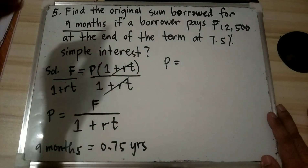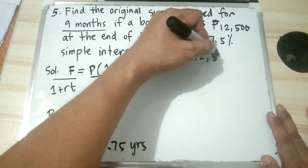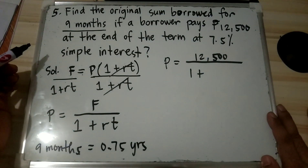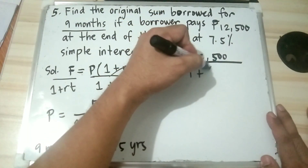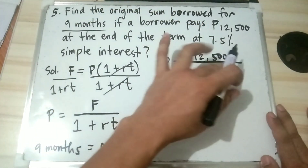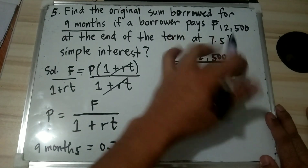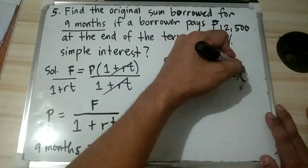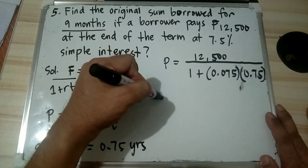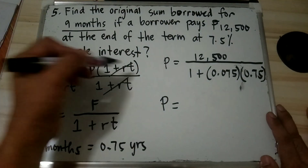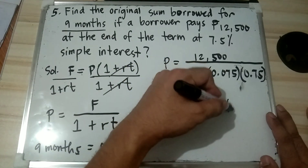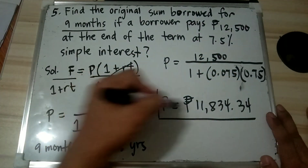So P = 12,500 ÷ (1 + 0.075 × 0.75). Using a calculator, the principal is equal to 11,834.34 pesos.